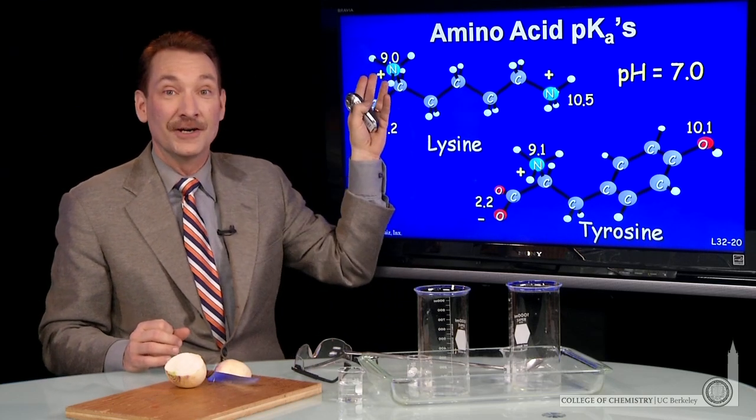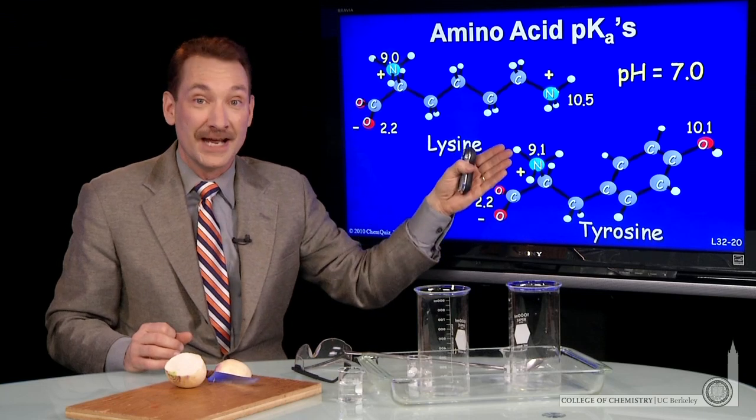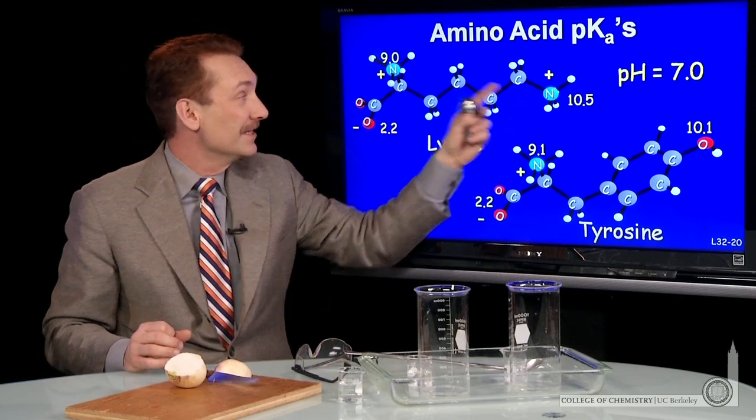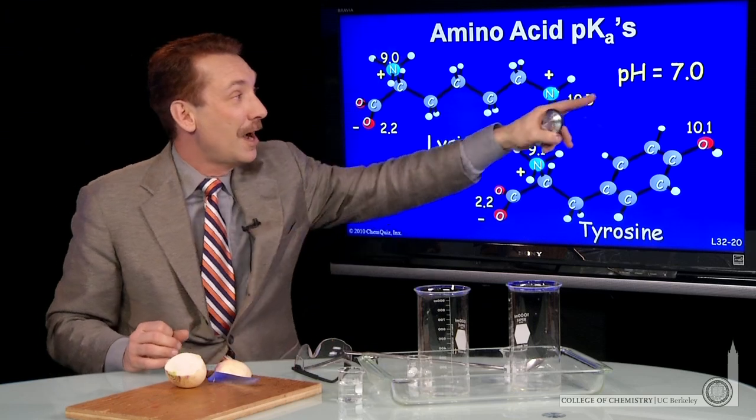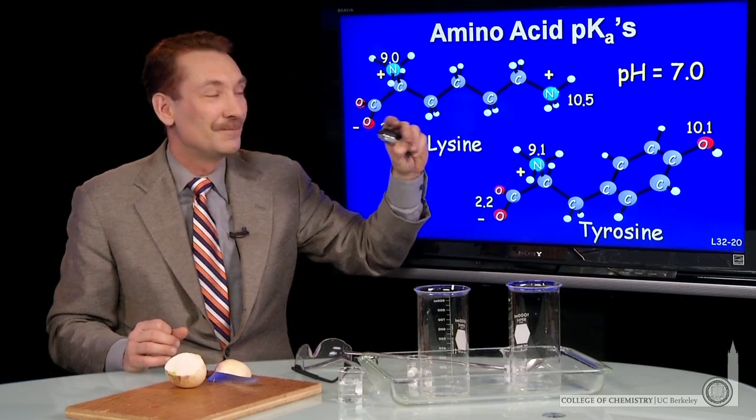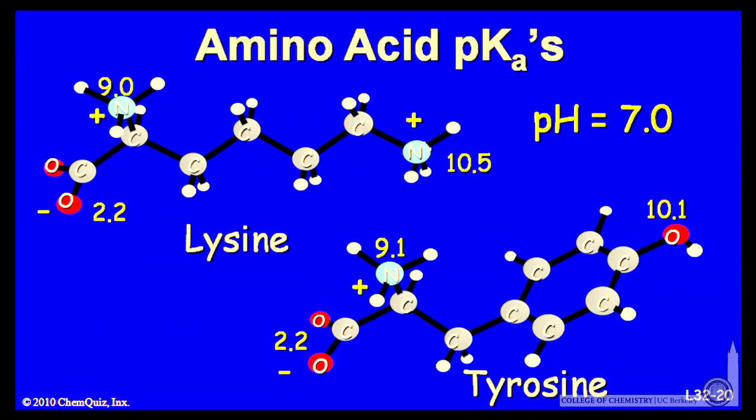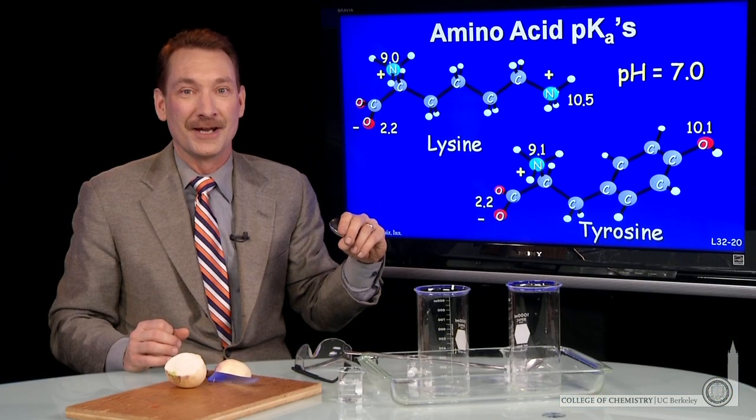These two side groups here I have drawn protonated because their pKa's 9 and 10.5 are above the pH. So here's pKa 10.5. The pH is 7, below that on the acidic side, so the acidic or protonated form predominates.